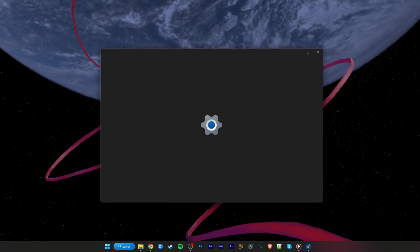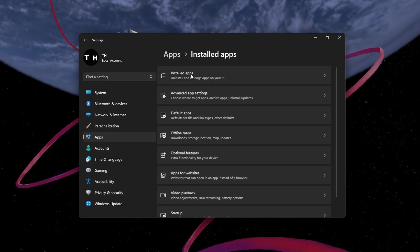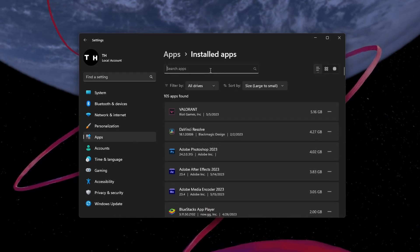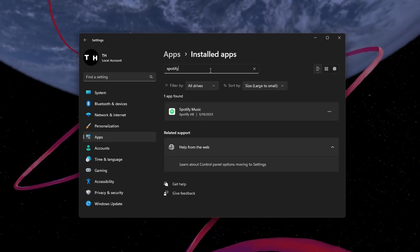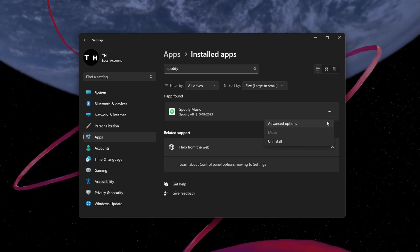Next, open up your Windows settings. In the Apps section, navigate to Installed Apps. Search for Spotify. Next, click on the menu icon and select Advanced Options.